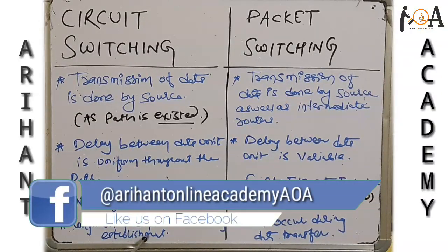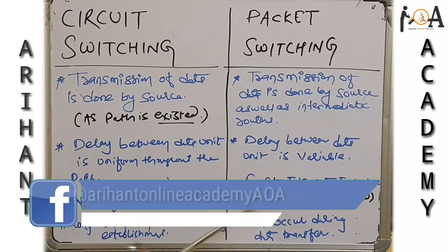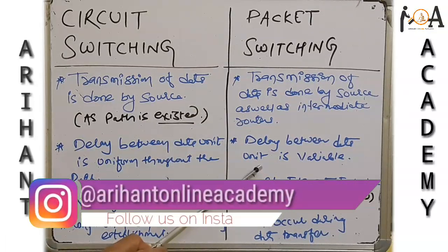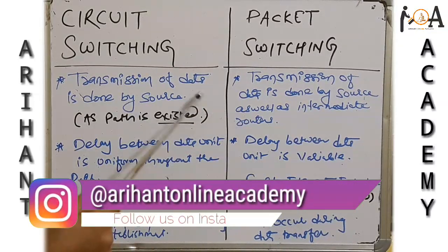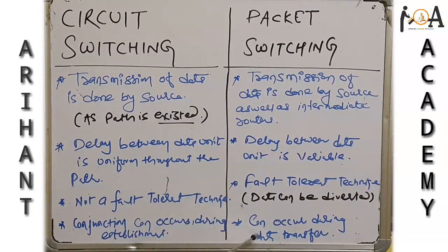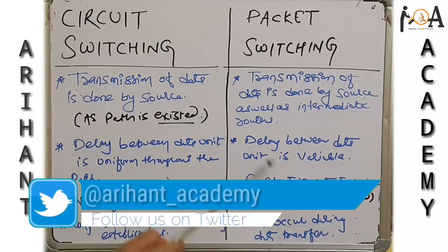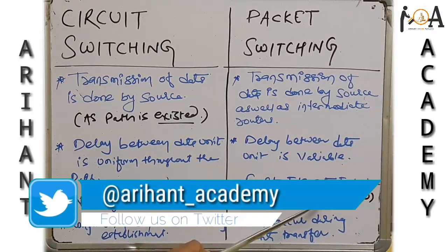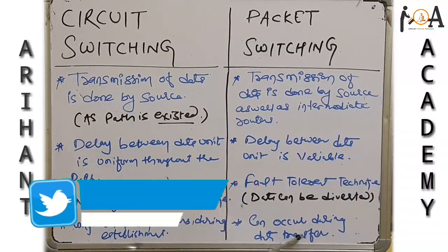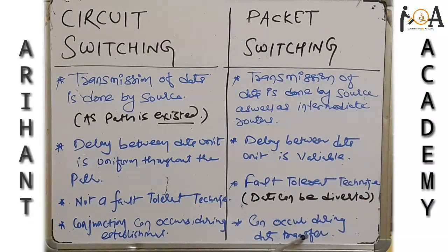In circuit switching, congestion can occur during connection establishment — when connecting source to destination through several networks, congestion may arise at that stage. But in packet switching, congestion can occur during data transfer, because each packet must connect through multiple devices and congestion may happen at the time of data transmission.